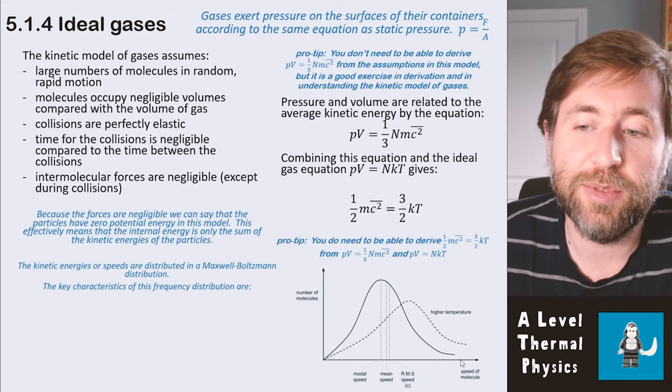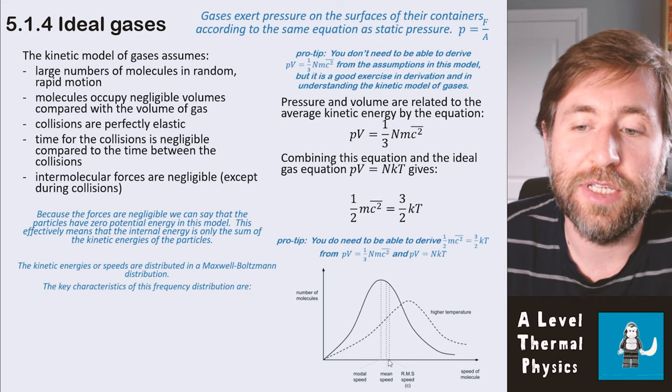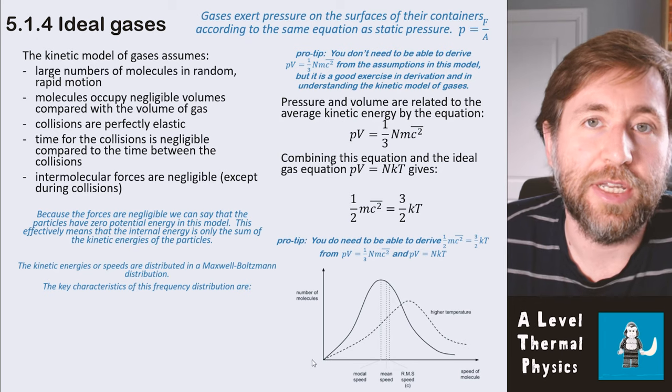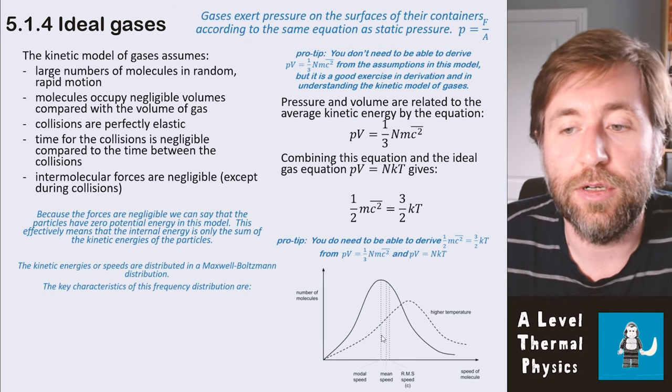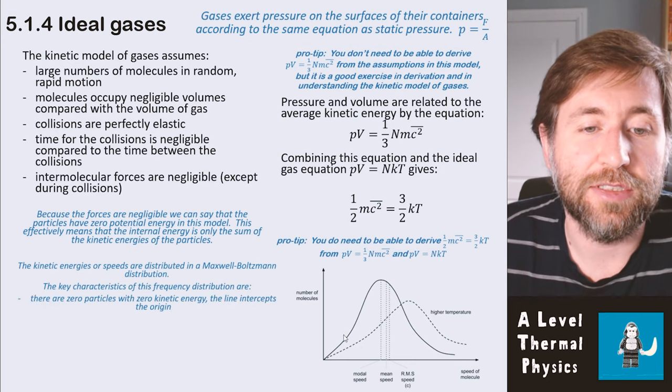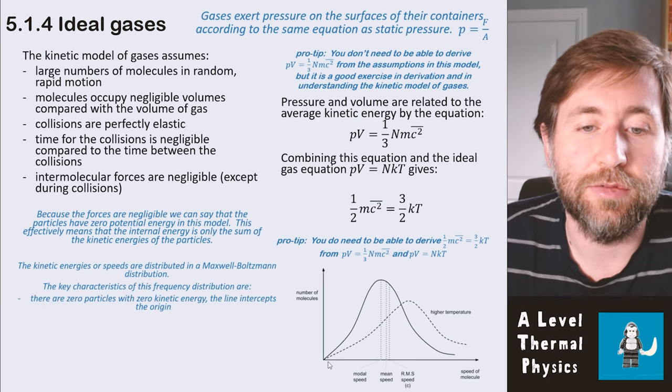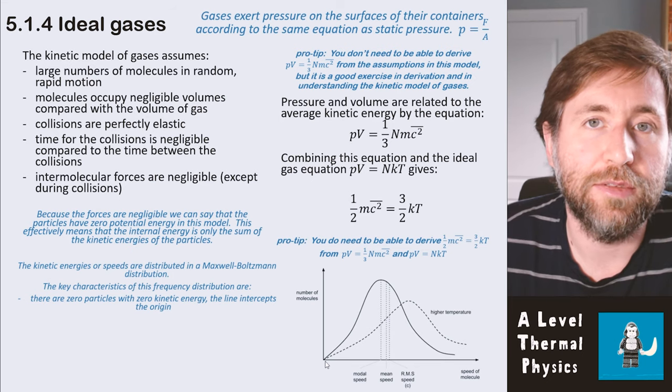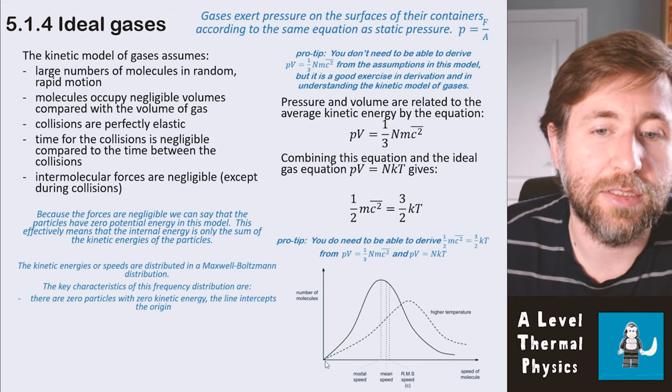So these are the higher speed molecules. You see there are fewer of those than this kind of average speed of the molecules. And the dotted line shows a higher temperature, which is lower peak and shifted towards the right of the graph. So the key features are there is zero particles with zero kinetic energy. And that means the lines intercept the origin. There are no particles with no kinetic energy. That has to be the case.